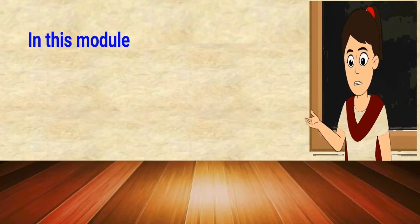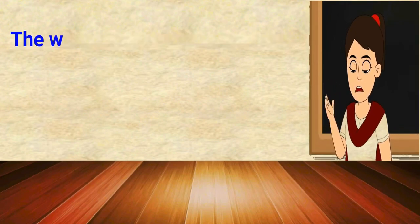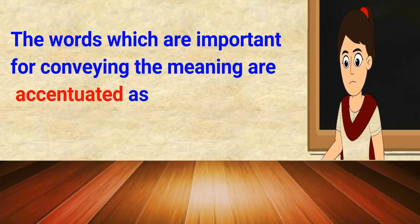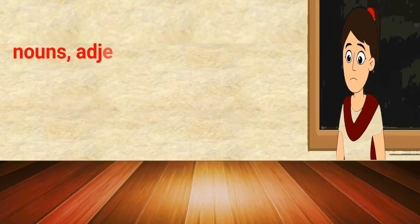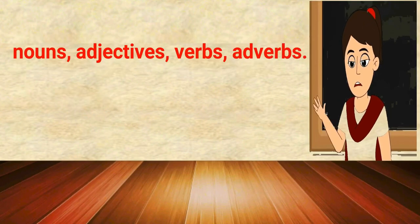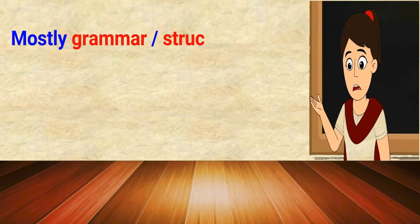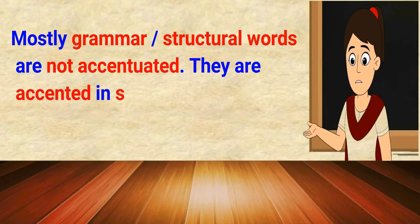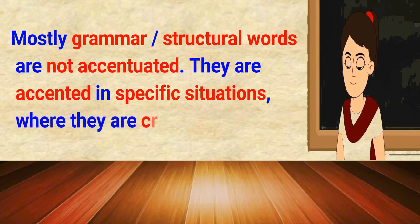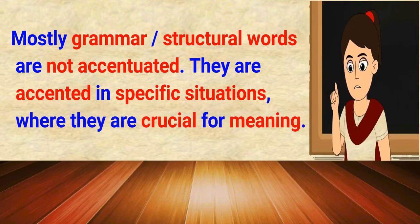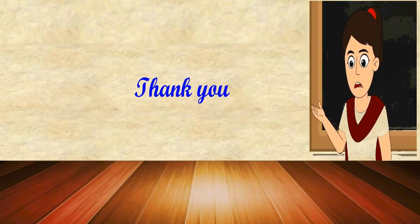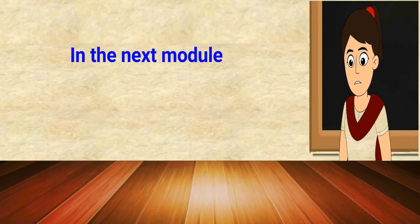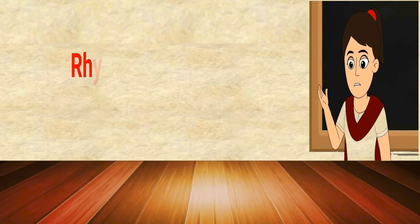In this module, we came to know that words important for conveying meaning are accentuated — as nouns, adjectives, verbs, and adverbs. Mostly grammar or structural words are not accentuated; they are accented only in specific situations where they are crucial for meaning. Thank you friends. We will meet in the next module and will come to know about rhythm and intonation.